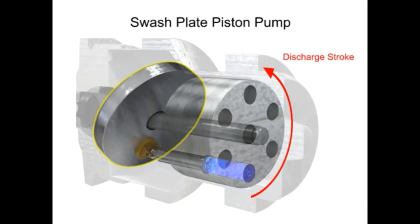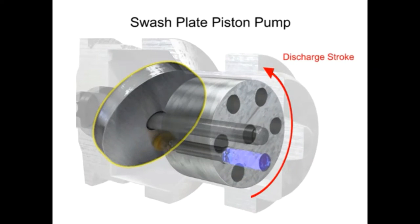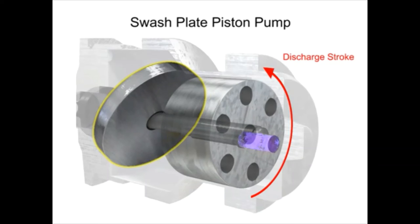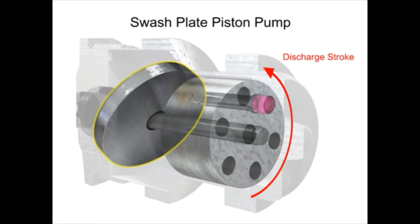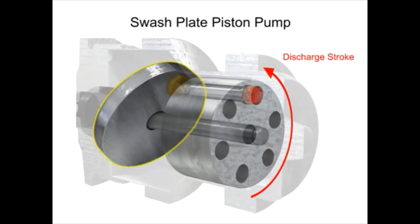On the discharge stroke, the angle of the swashplate forces the pistons back inside the piston block and discharges the fluid. The greater the slant on the swashplate, the further the pump pistons move and the more fluid they transfer.